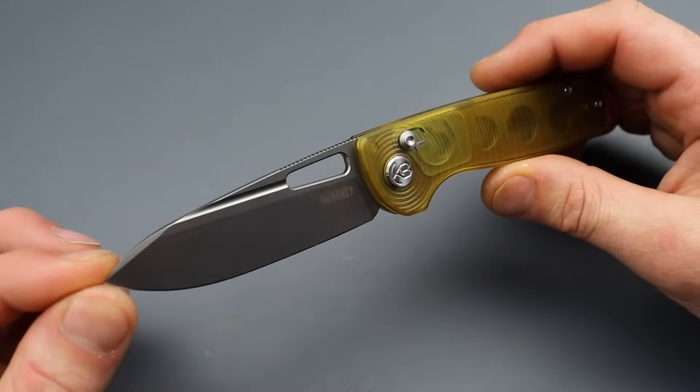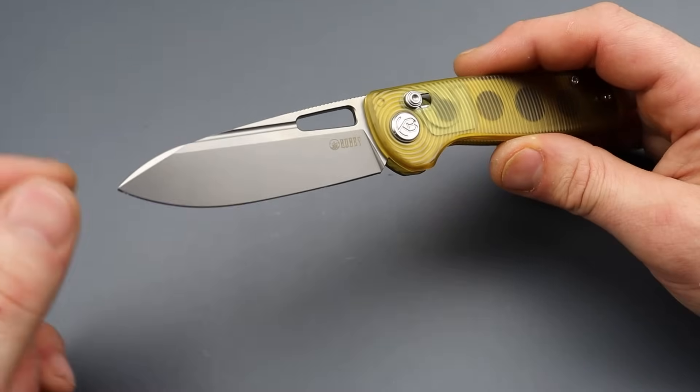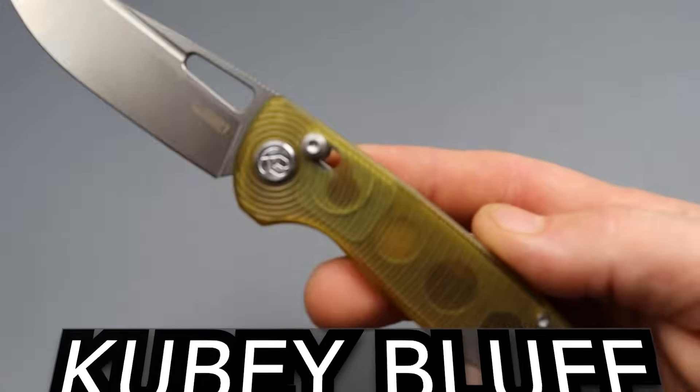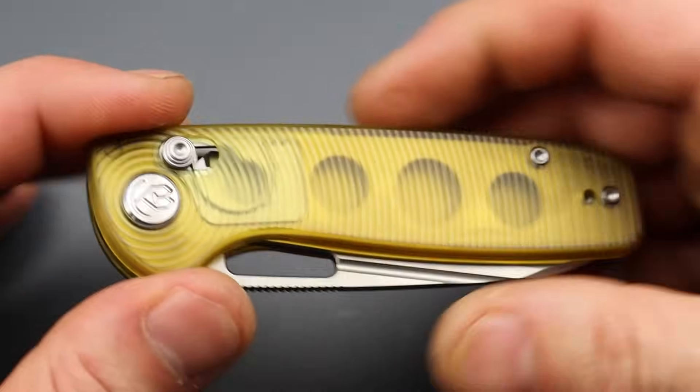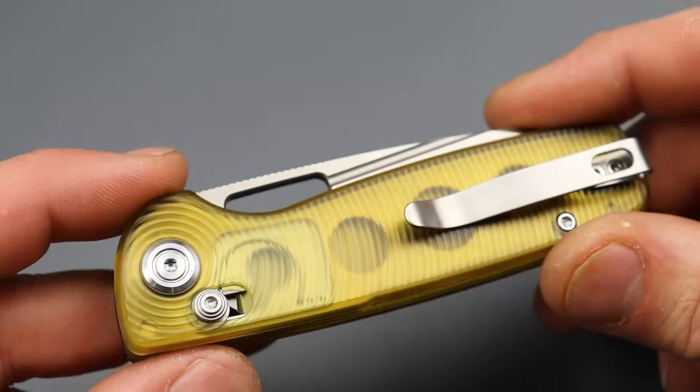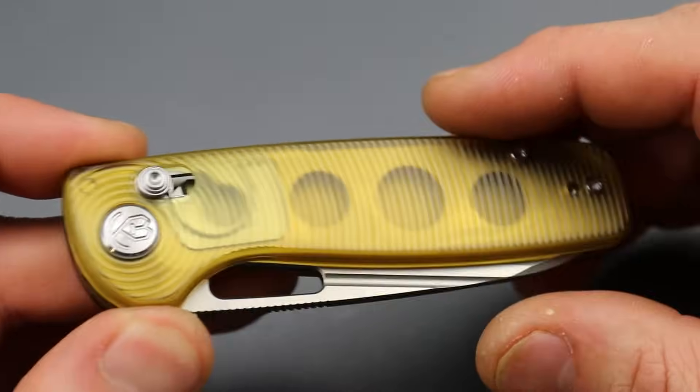This is Kubey's new model. I forget the name of it, but I'll put it on the bottom of the screen. This is their first crossbar lock. They've never done a crossbar lock before, so this is their first attempt. Now, I will be honest, it does have a deal breaker on it, but we'll talk about it.